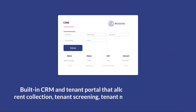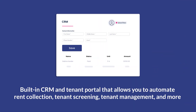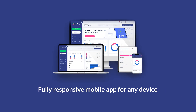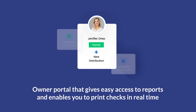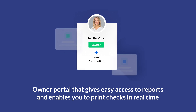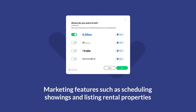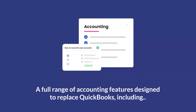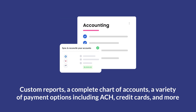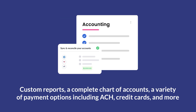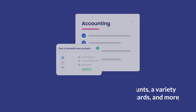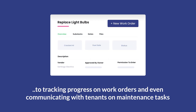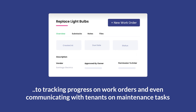Some features include a built-in CRM and a tenant portal that allows you to automate rent collection, tenant screening, tenant management, and so much more. There's a fully responsive mobile app for any device, an owner portal that gives easy access to reports and enables you to print checks in real time, marketing features such as scheduling showings and listing rental properties, a full range of accounting features designed to replace QuickBooks — including custom reports, a complete chart of accounts, a variety of payment options including ACH and credit cards — and an easy interface to manage work orders from scheduling maintenance requests to tracking progress and communicating with tenants on maintenance tasks.